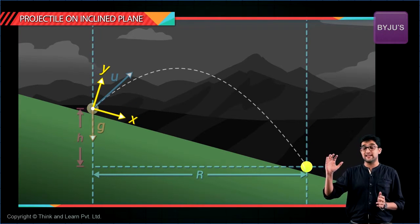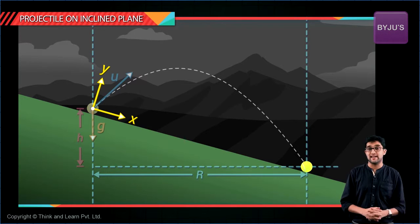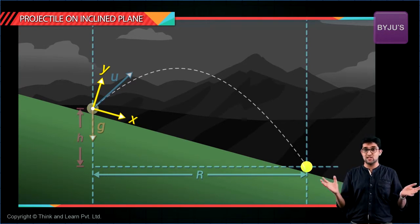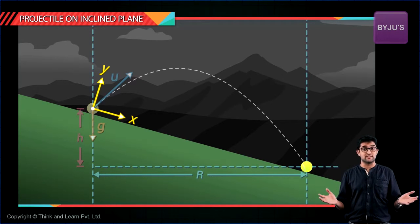along the inclined plane and perpendicular to the inclined plane and do the same thing. Write the equations of motion for these two axes, solve the equation and get your answer. Very simple. So complex questions also become easy when